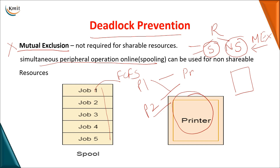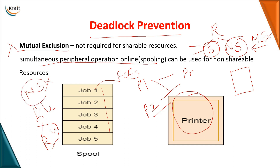However, spooling can be used in some cases but not for all resources. For example, with a file, you may want one process to read and another to write at the same time, which is not possible. So, practically, eliminating mutual exclusion for non-shareable resources is not feasible.